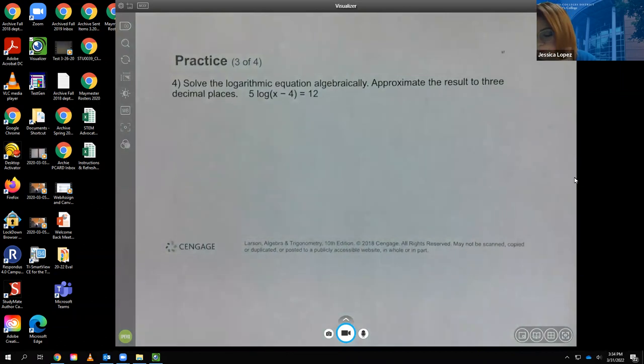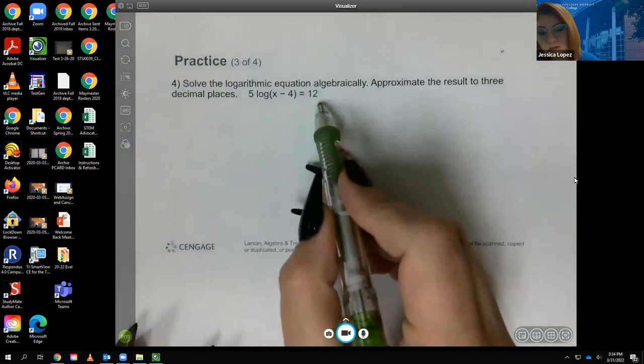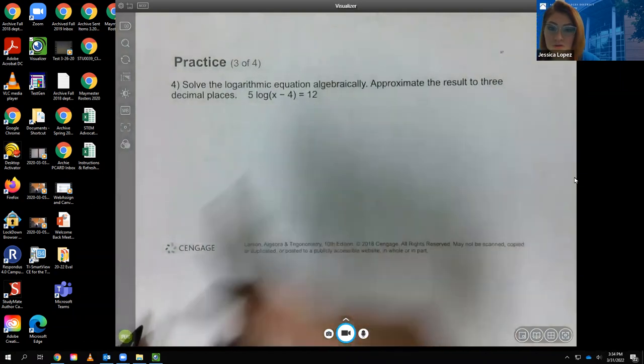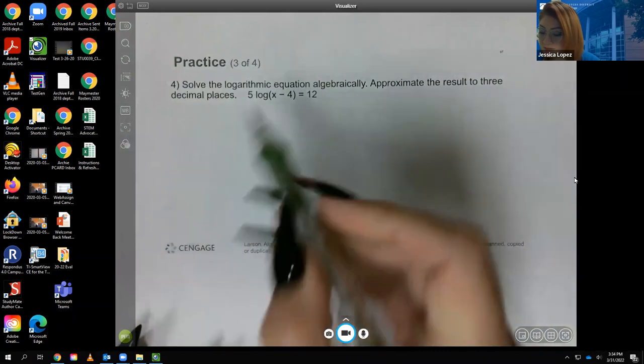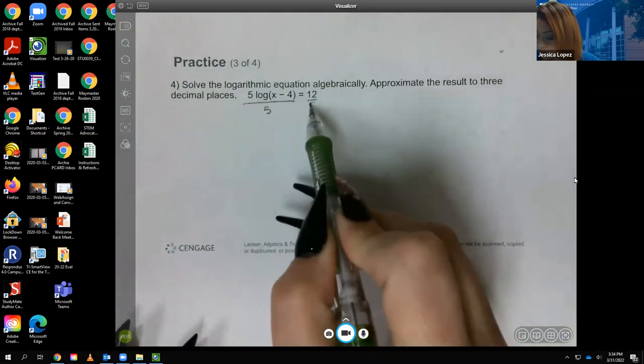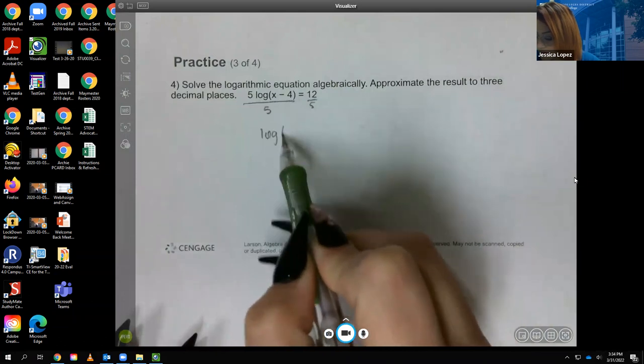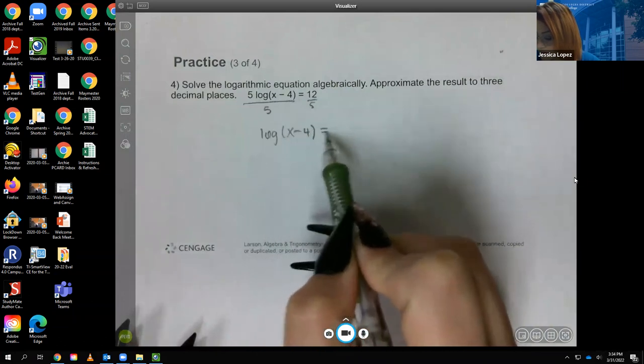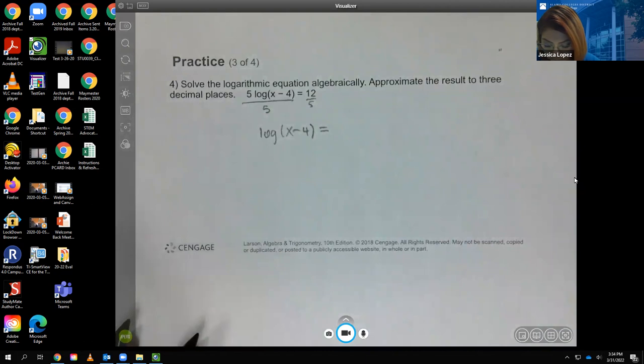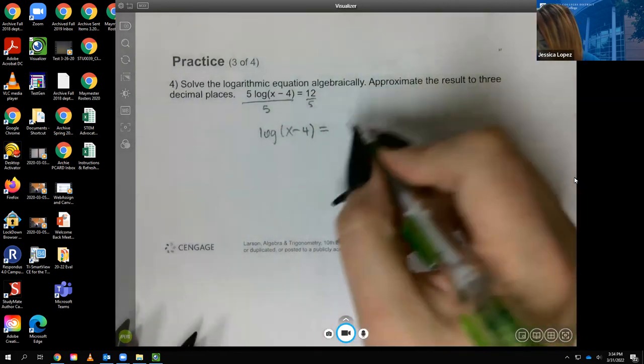So we're going to go over the practice problem number four. This is a logarithmic equation, but one of the terms does not have a log, which means you have to get this log all by itself. So I'm going to divide by five. Then I have log(x - 4) equal to whatever 12 divided by 5 is, 2.4.